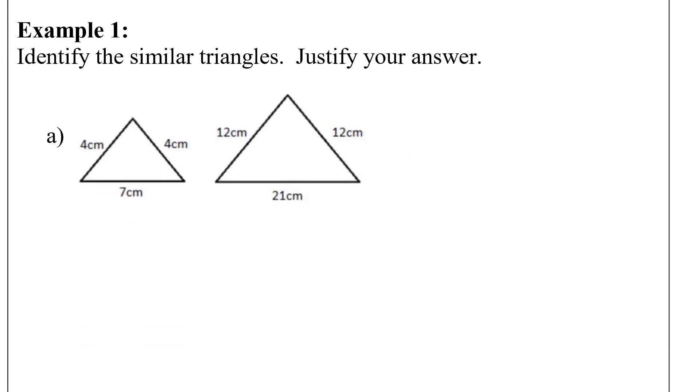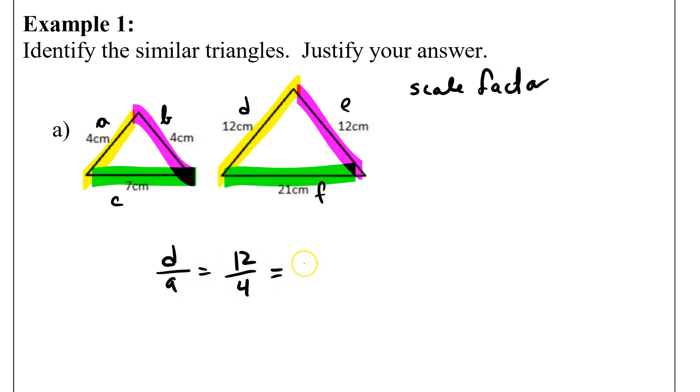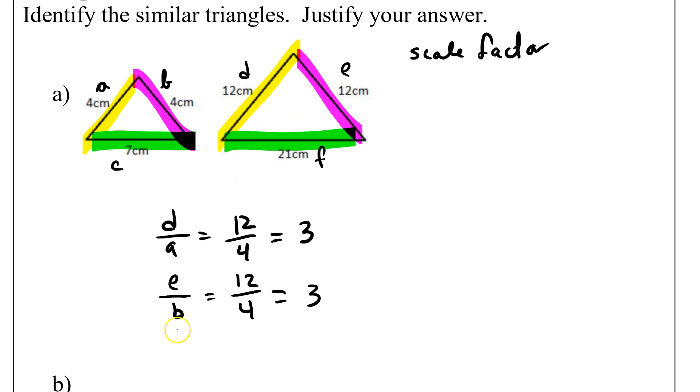Identify the similar triangles. Justify your answer. I can call this side A, this side B, this side C, and then D, E, and F. I'm saying that A is similar to D, B is similar to E, and C is similar to F. First things first. We need to check if they all have the same scale factor. I'm going to say D over A is 12 over 4, which is 3. We compared the two similar sides here. Start with the E on the top and then the B on the bottom. That's still 12 over 4 is 3. We start out with a bigger triangle here. I'm going to say F over C is 21 over 7, which is also 3.